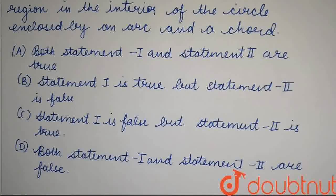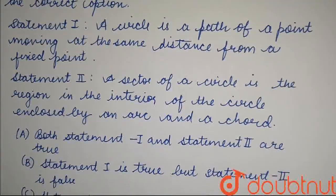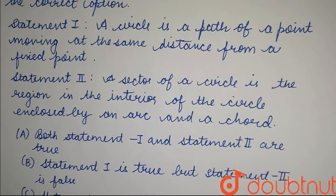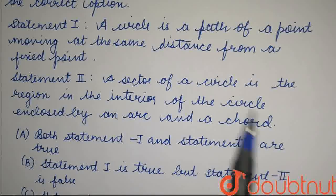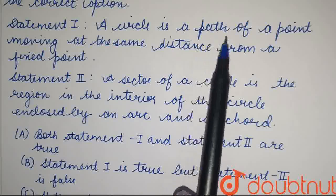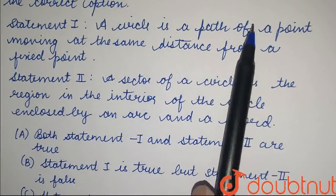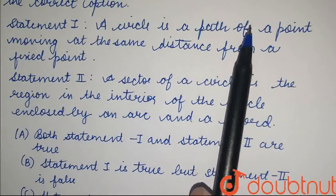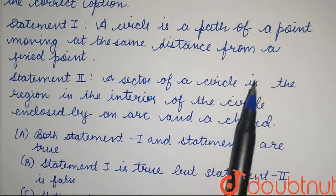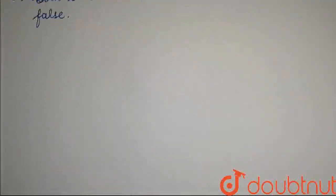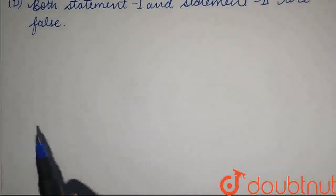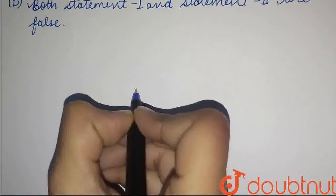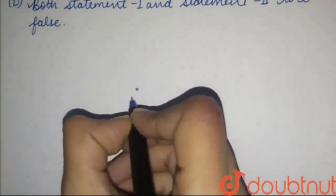So we have to check statement one and two, right? First of all, statement one. What does statement one mean? A circle is a path of a point which moves from a fixed point in the same direction. So let's see. A fixed point should not change. This is a fixed point.